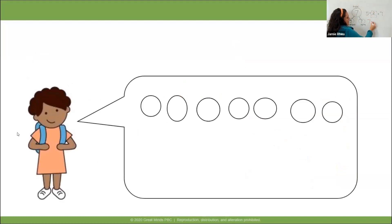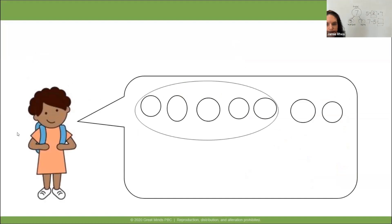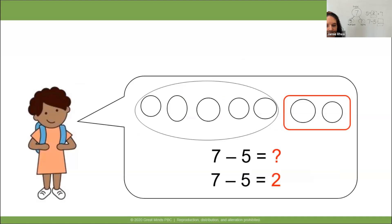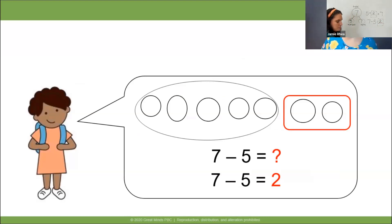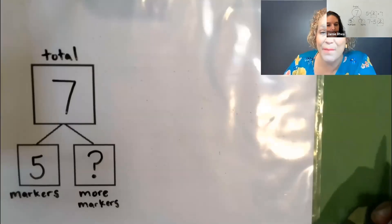This is Jada — let's see how she solved it. She said: I knew there were seven markers total; I took away the five markers we already had and got two. Seven minus five equals two. Nice work, Jada — she used subtraction. Give me a thumbs up if you used subtraction too. Did our friends get the same answer even though one used addition and the other used subtraction? Yes! They both got two.